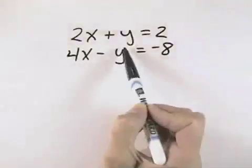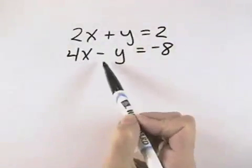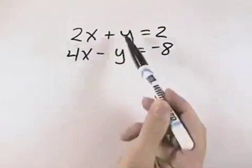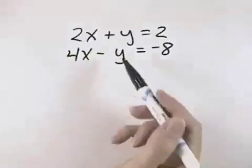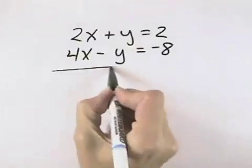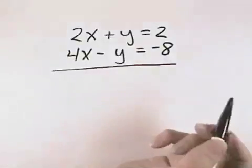Sometimes the problems are set up very nicely, as in this case, where we have 2x plus y equals 2 and 4x minus y equals negative 8, because the y's already have opposite coefficients. That means we don't need to multiply by anything. In this case, we can instead just add our two equations together.